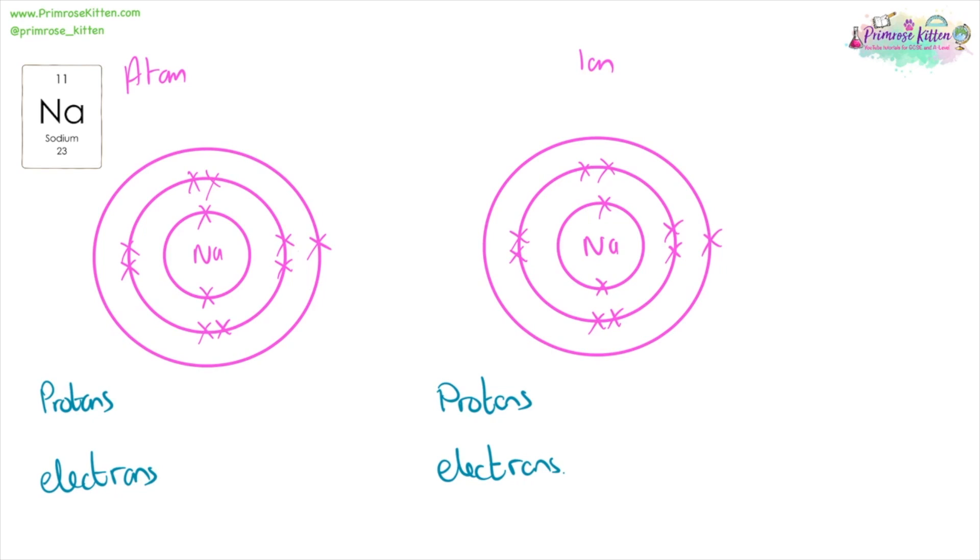Here we have sodium, and it has an atomic number of 11, which means it's going to have 11 protons in the nucleus, and protons have a positive charge. In the atom, it has 11 electrons. Electrons have a negative charge. Now in the atom, the positive charges and the negative charges cancel each other out, so the overall charge on the atom is going to be zero.